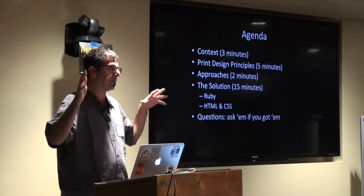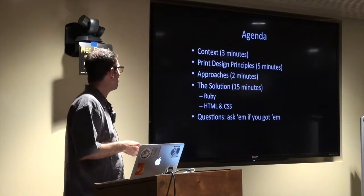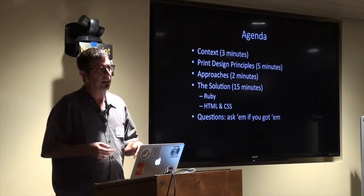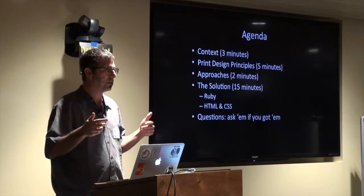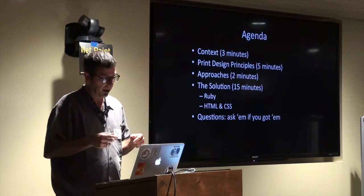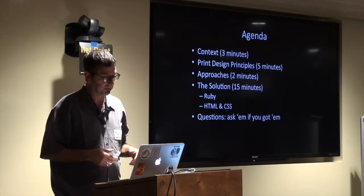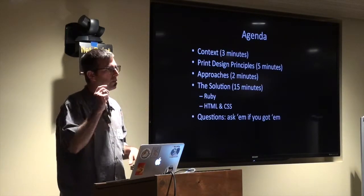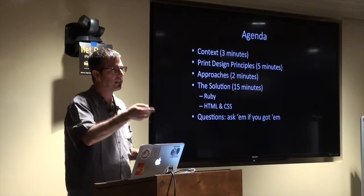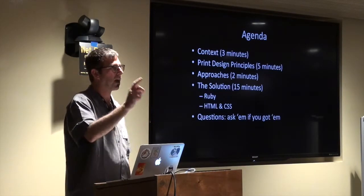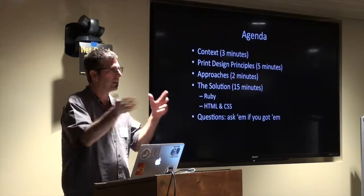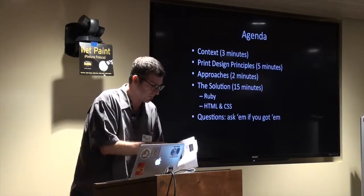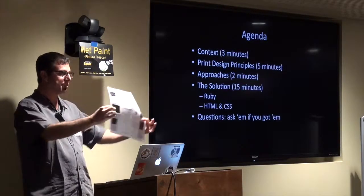So I'm going to talk today a little bit about the context — what's the business problem I'm trying to solve. I'm going to talk about some issues that are unique to print, then discuss the different approaches that I took to the problem, and then show what solution I actually ended up doing. I passed out some handouts, so there should be a book on each of your tables. That's actually the end product — it's a copy of Avogadro Corp, a black book.